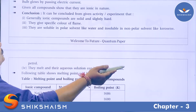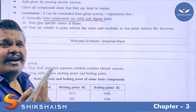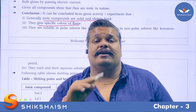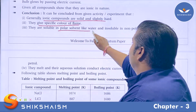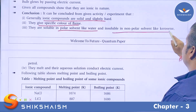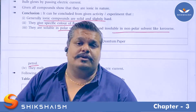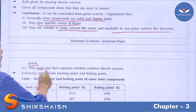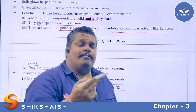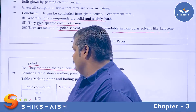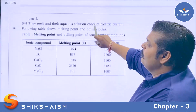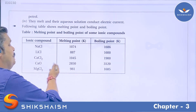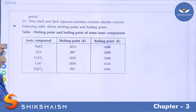It can be concluded from the given activity and experiment that: ionic compounds are generally solid and hard substances; they give a specific colour to the flame, as every cation has a specific designated colour in a flame test; they are soluble in polar solvents like water but remain insoluble in non-polar solvents like kerosene or petrol; and they melt and their aqueous solution conducts electric current. A table showing melting and boiling points of ionic compounds indicates they have higher melting and boiling points.